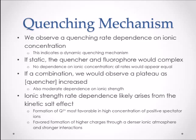We found that as ionic strength increases, the quenching rate constant decreases. This dependence is indicative of a collisional dynamic quenching mechanism. If this were another type of mechanism, we would not see as much dependence on ionic strength. The reason for the rate dependence is most likely due to the kinetic salt effect, which explains that there is a kinetically favored formation of higher charges through a denser ionic atmosphere and stronger molecular atmospheric interactions. Also, because counter ions are not present to interact with the electron cloud, the formation of quinine ion is most favorable in high concentration of positive spectator ions.